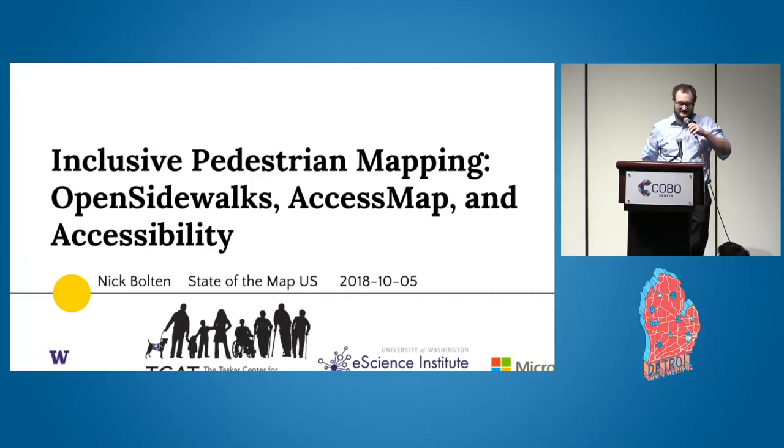I'm going to apologize in advance for having too many slides and talking way too fast. I'm going to try to get through as much as I can so there's plenty of time for questions. I'm going to be talking about inclusive pedestrian mapping — Open Sidewalks, AccessMap — two different projects, as well as accessibility in general and OpenStreetMap.